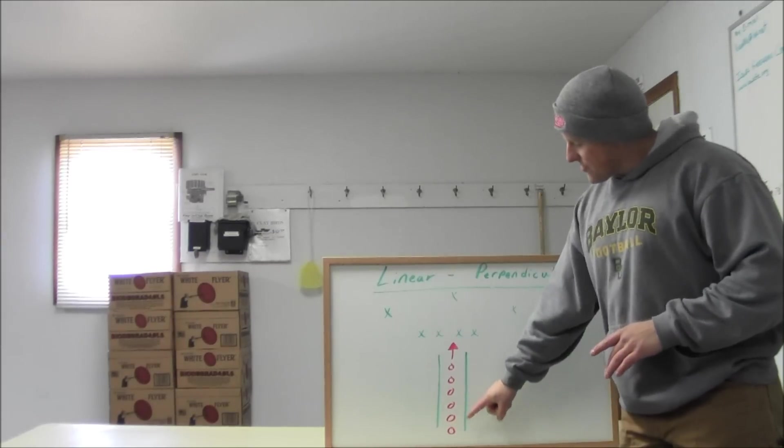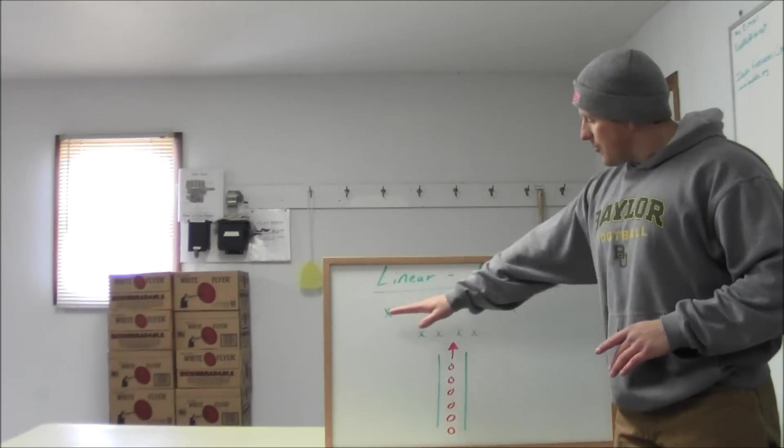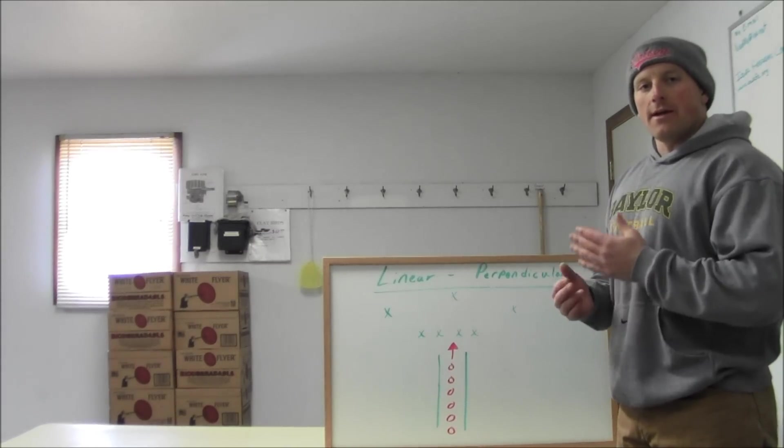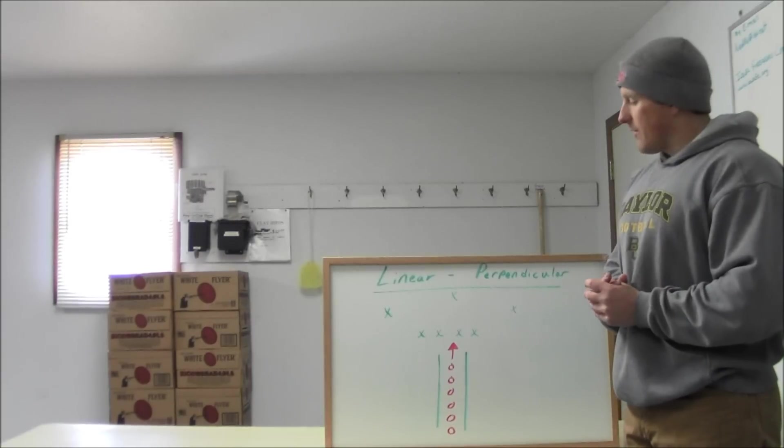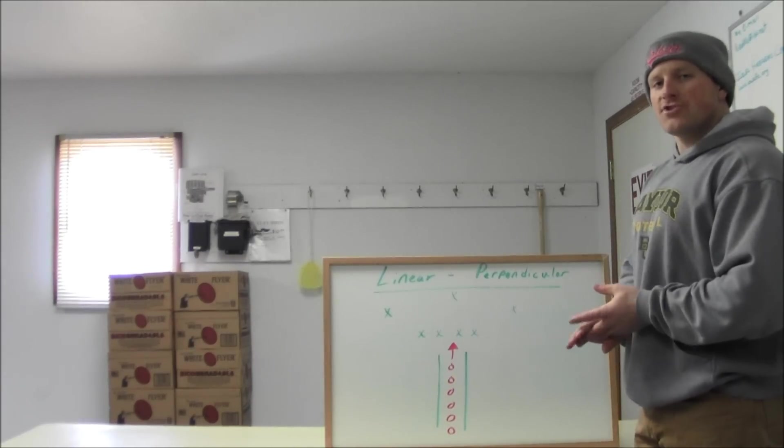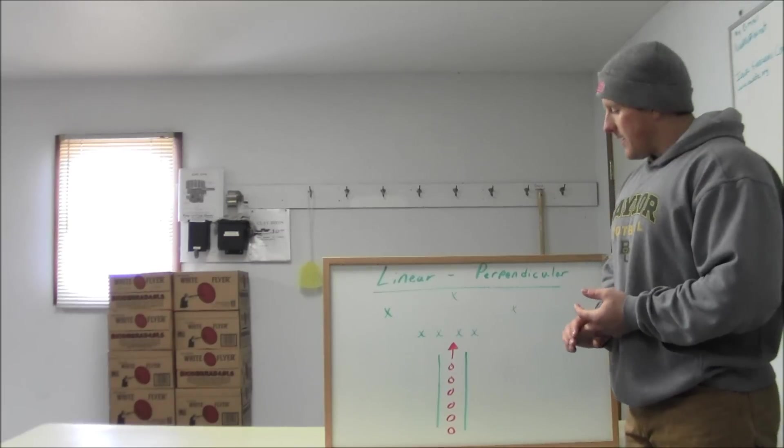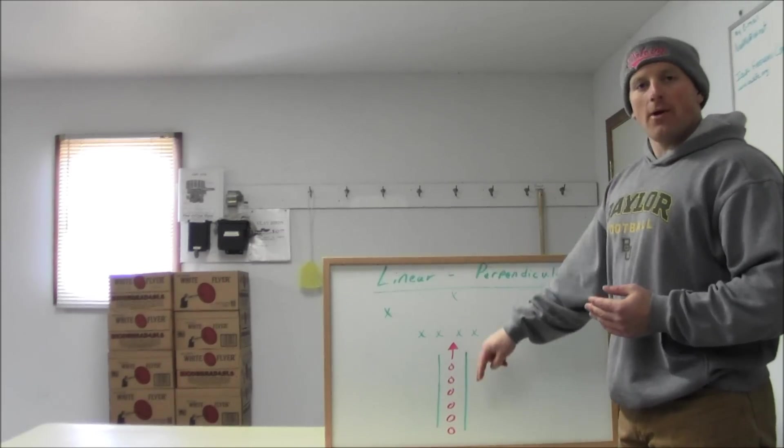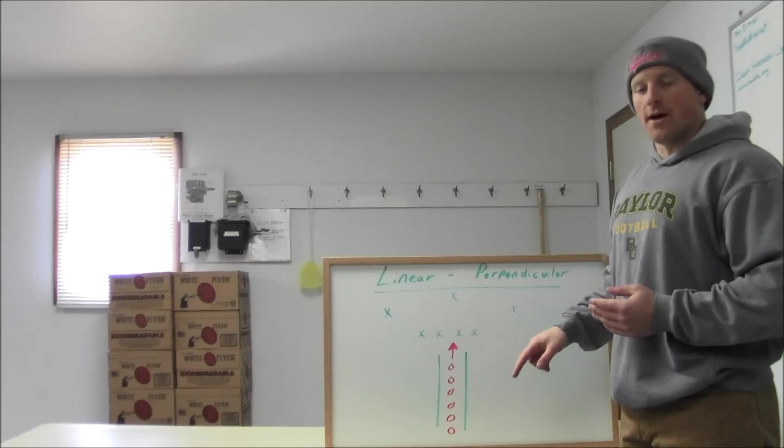As you can see, we have our enemy's direction of travel. Our ambush site is going to be set up directly in front of them, perpendicular. Now, in classical naval terminology, they would call this crossing the T. So the major advantage that we are going to get by doing this kind of ambush is that we get to direct all of our firepower onto the long axis of the enemy.